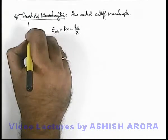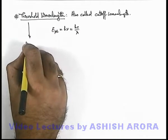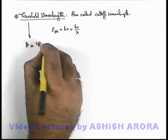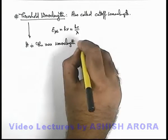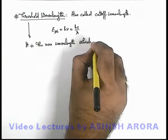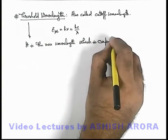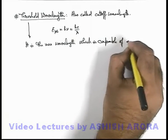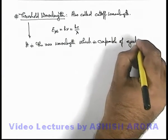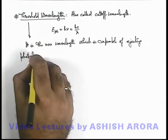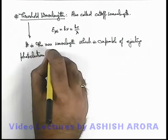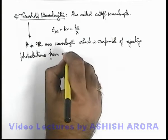Now about threshold wavelength we can write: it is the maximum wavelength which is capable of ejecting photoelectrons from a metal.